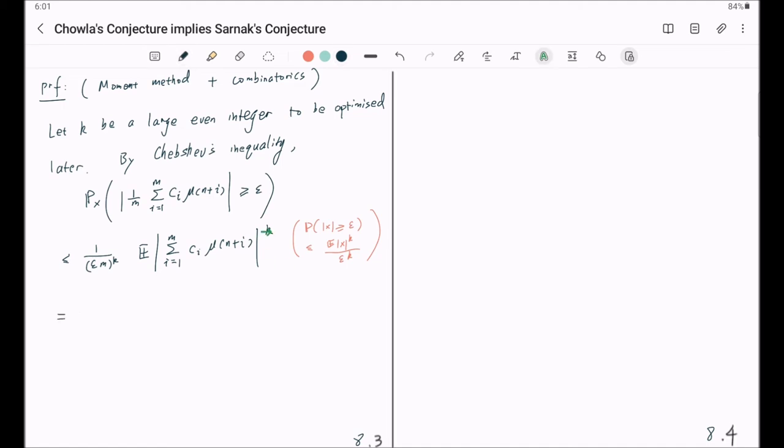Now, because this k is even, you can simply replace this absolute value sign by the normal bracket. Because k is even. And now we expand this. Just look at the sum raised to power k. Expand this using elementary combinatorics.